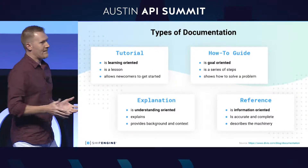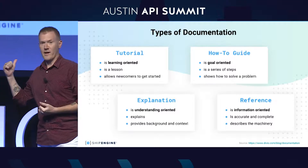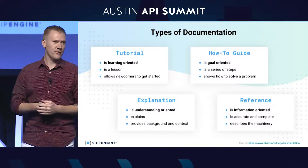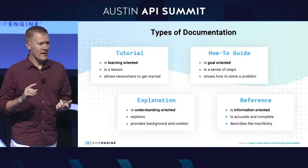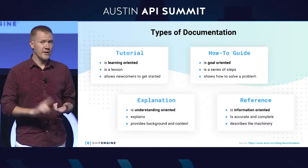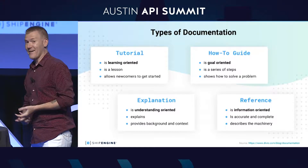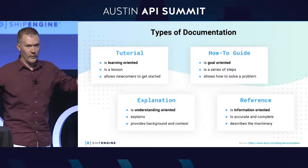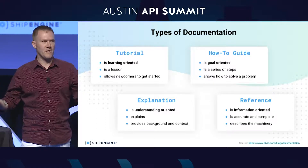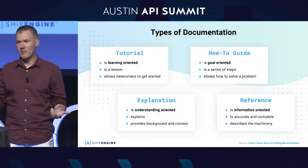Every API — really every software product — needs four types of documentation. Tutorials are your absolute beginner content. For an API, this would include things like how to create an account, how to get your API key, how to make that very first HTTP request. The point of a tutorial is not necessarily to solve a real business need. We have a tutorial on ShipEngine that's just how to build a Twitter bot — that's not a real business need, but it's something a beginner can easily wrap their head around and focus on the steps of the tutorial rather than a broader business concept.